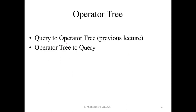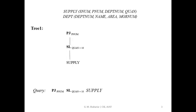In the previous lecture, we have seen how the operator tree has come. The operator tree has two interventions, which are the binary operator.